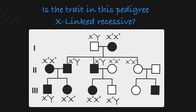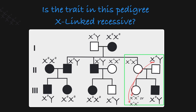So this family does follow standard X-linked recessive inheritance. And finally, looking at this last subfamily, we see this female — who we know is heterozygous — can pass her recessive allele on to her son, making him affected, while their daughter is unaffected because the father has to pass his single dominant X-allele on to her. Overall, this pedigree is an excellent example of the X-linked recessive mode of inheritance.